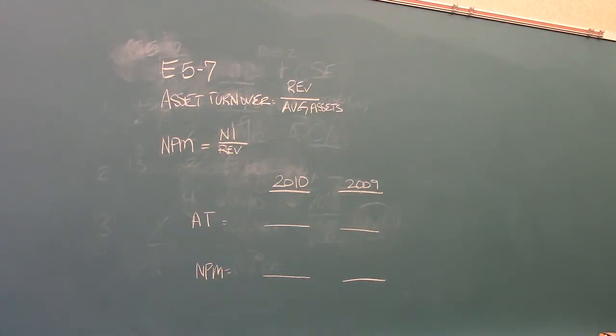Okay, the last problem that we have for the first section of the homework for Chapter 5 is E57. E57 asks us to analyze and interpret the asset turnover and net profit margin ratio, and it gives us some information about Papa John's.